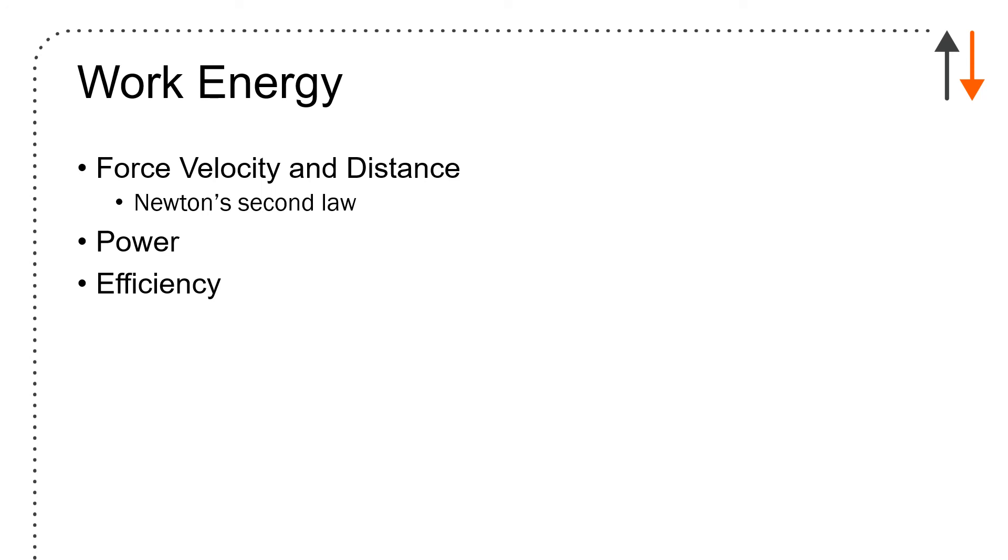What's important in this? Work energy is really force, velocity, and distance. One of the things that you have to do as you start to read these problems and do these things, make sure that you understand where the derivation came from Newton's second law because that tells you how to identify the problem. We've talked about power and efficiency, and I think that about covers it.